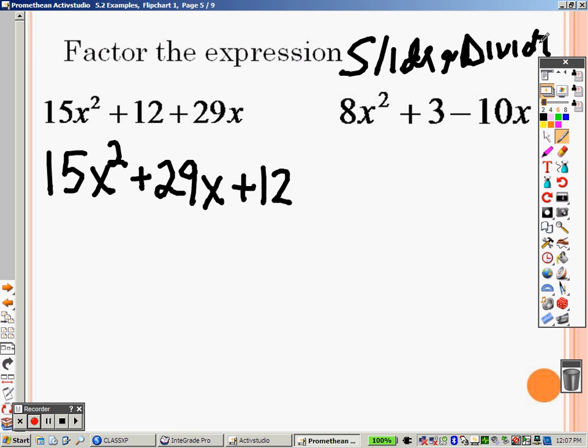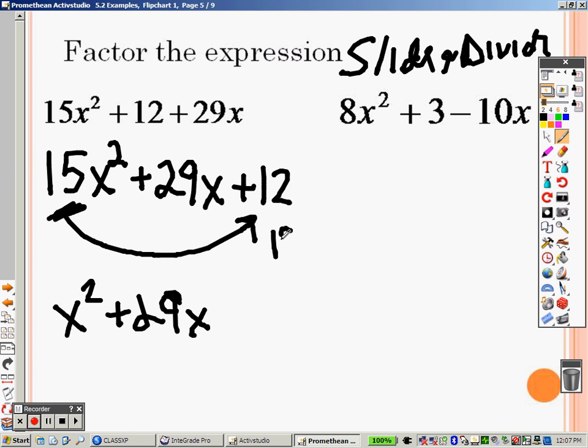So you're used to factoring items like you did before. So we are going to try to slide and divide now. And what that means is you take that 15 and we're going to slide it over. So what happens here is we get x squared, because we slid that over, we still have the 29x, but 15 times 12. What is 15 times 12? 180. So we do 15 times 12 and we get 180.